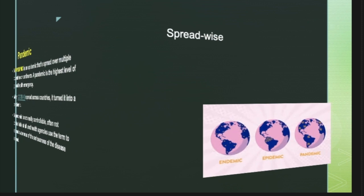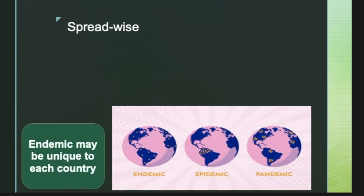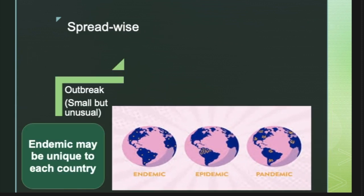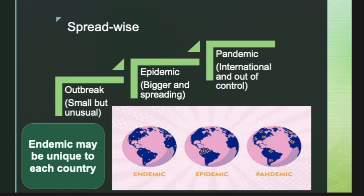Let us look at these terms spread-wise. An endemic may be unique to each country. An outbreak is small but unusual. An epidemic is bigger and spreading. And a pandemic is international and out of control.